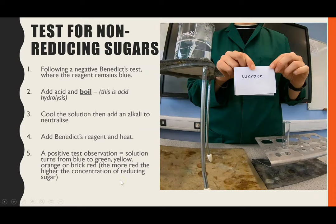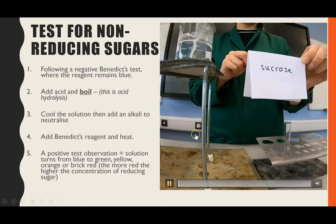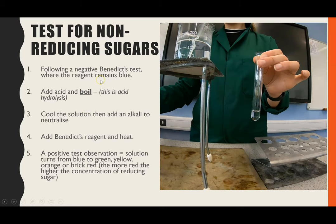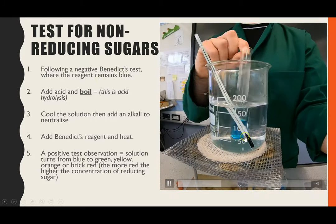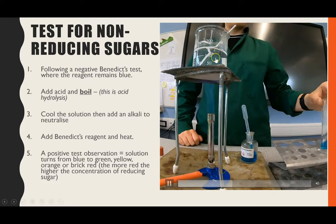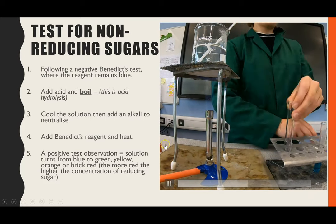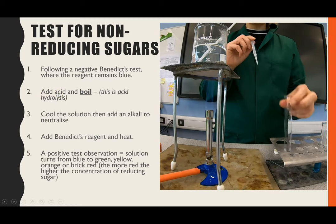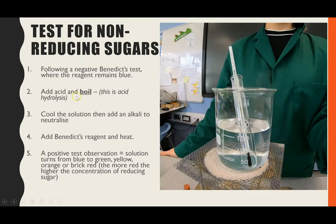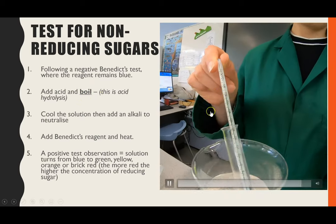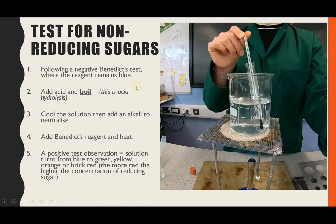Next, the non-reducing sugar test. The only non-reducing sugar you learn about is sucrose. First, you must confirm it isn't a reducing sugar by doing the Benedict's test — leaving the sample in hot water with Benedict's for a few minutes gives a negative result. Then, to test for sucrose, the next step is acid hydrolysis. I've added acid to my sample of sucrose, and this time you need to bring it to boiling — I have a thermometer in the test tube to confirm it reaches 100°C.